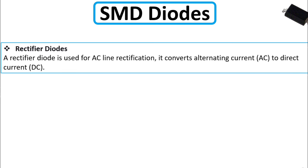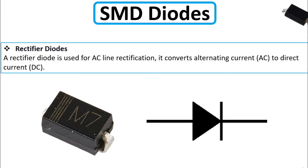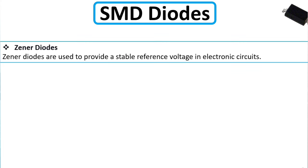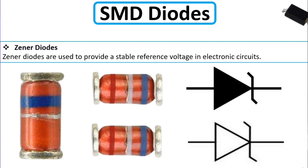A rectifier diode is used for line rectification — it converts alternating current AC to direct current DC. The Zener diode is used to provide a stable reference voltage in electronic circuits. Zener diodes typically have a blue band on them — the blue band means it is a Zener diode. Here are some samples of Zener diodes.